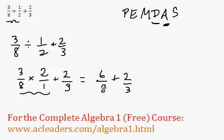Now we can simplify this a little bit. Divide it by 2, divide this by 2 also. We can get 3 over 4. So we have 3 over 4 plus 2 over 3.